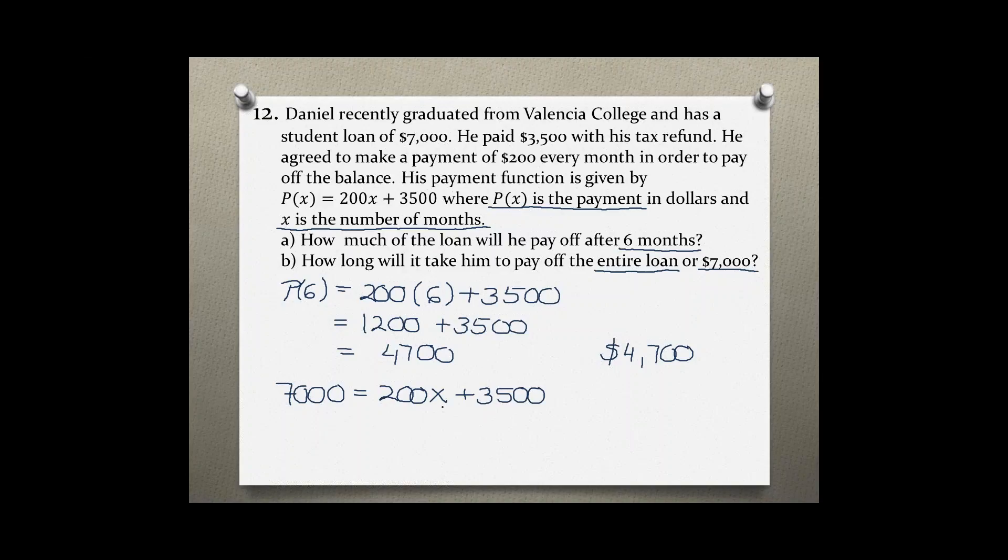So first I subtract $3,500 from both sides. This leaves me with $3,500 equals $200x, and then I divide by $200 on both sides.